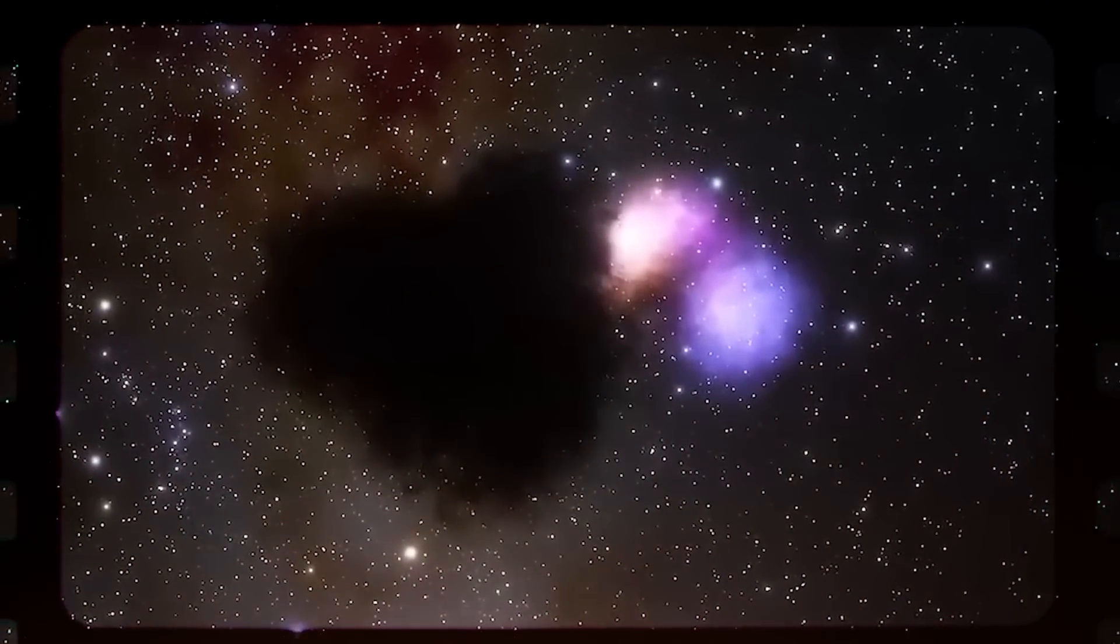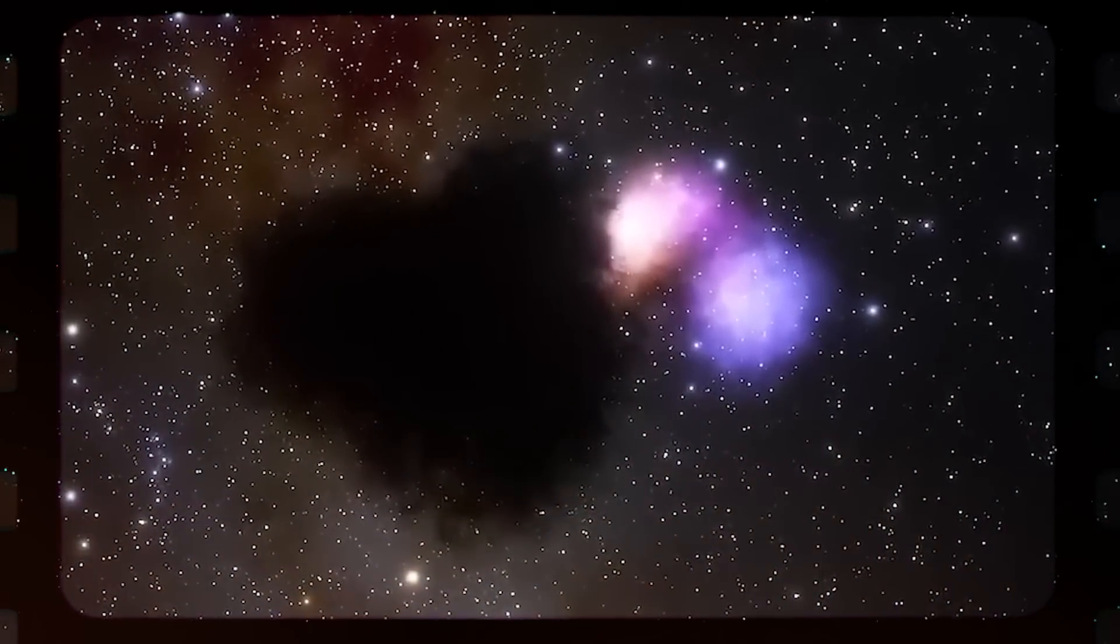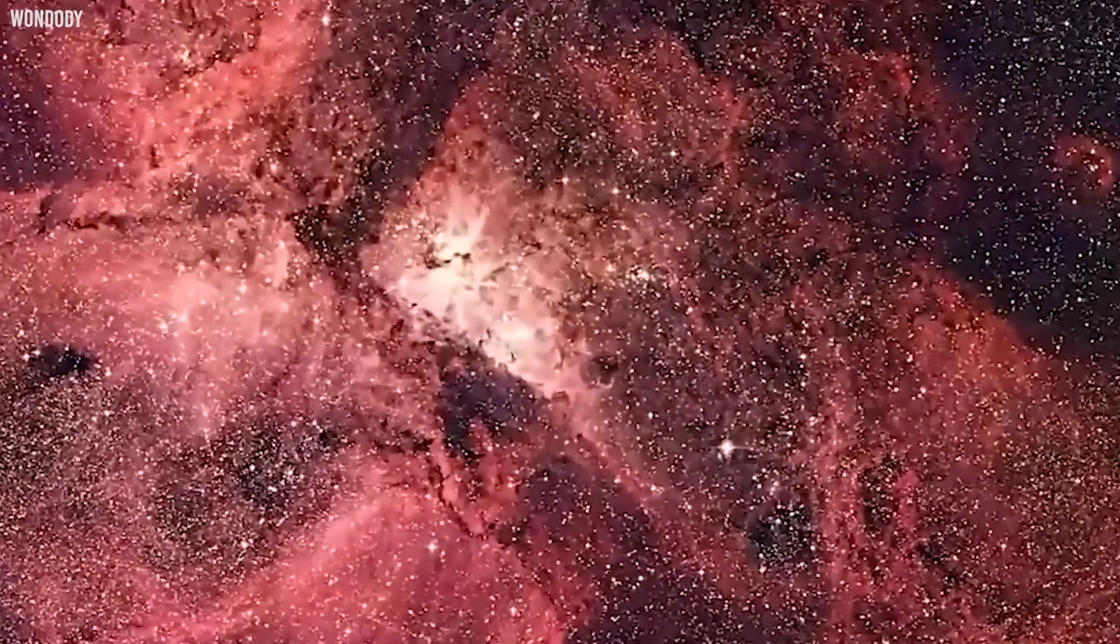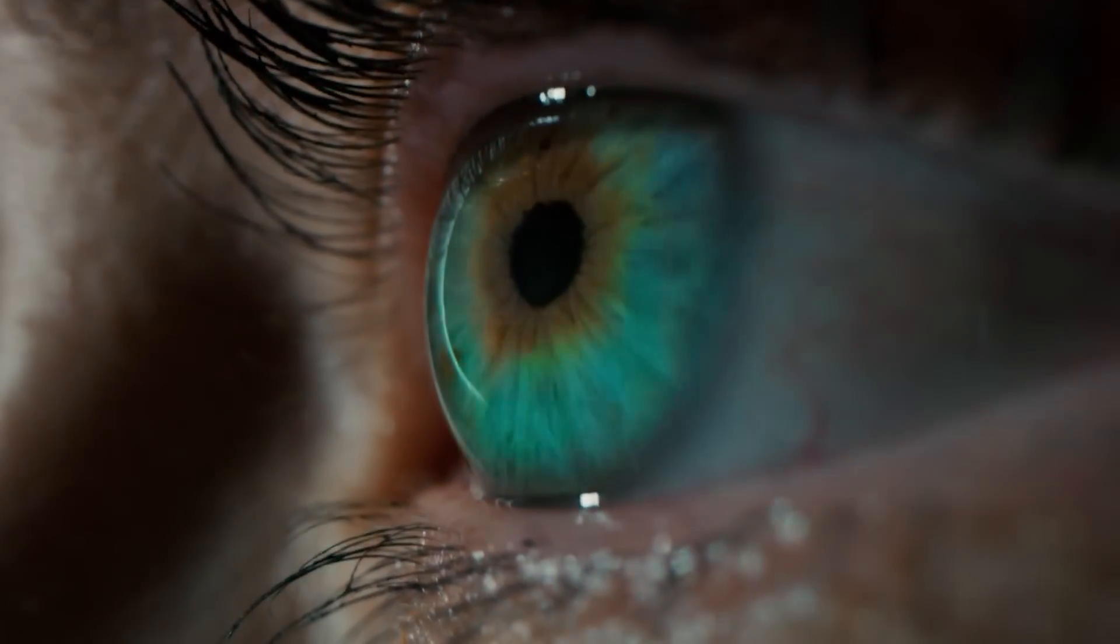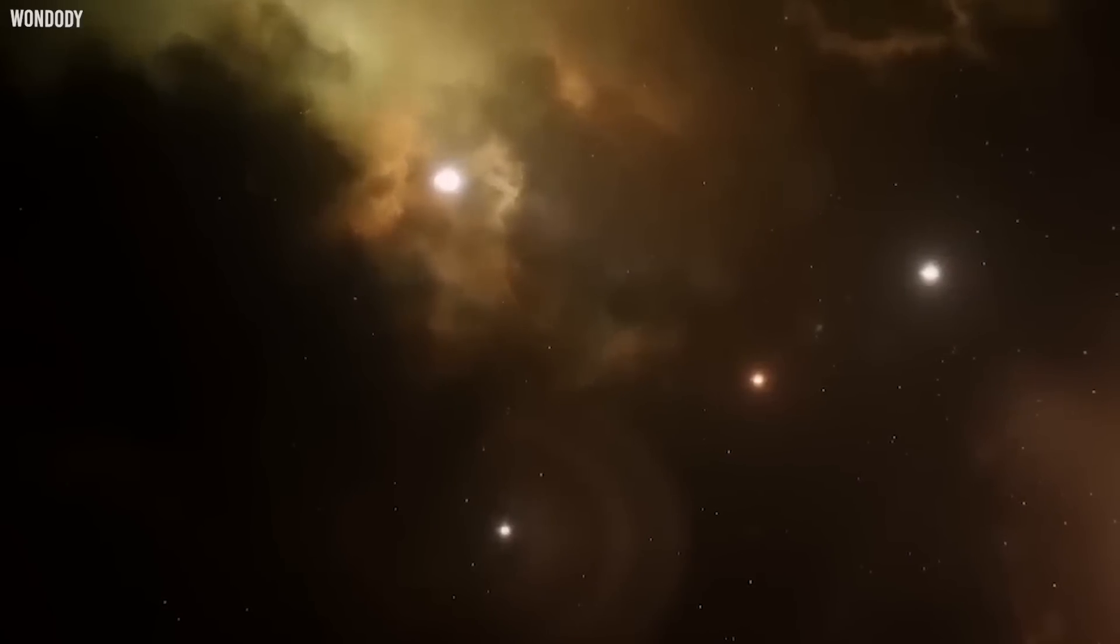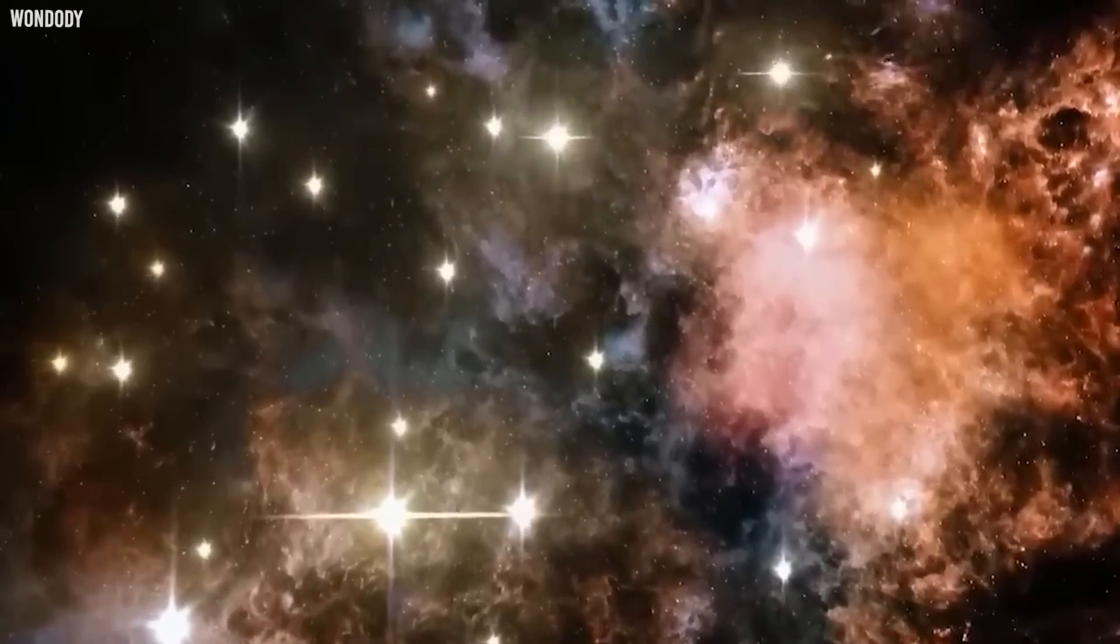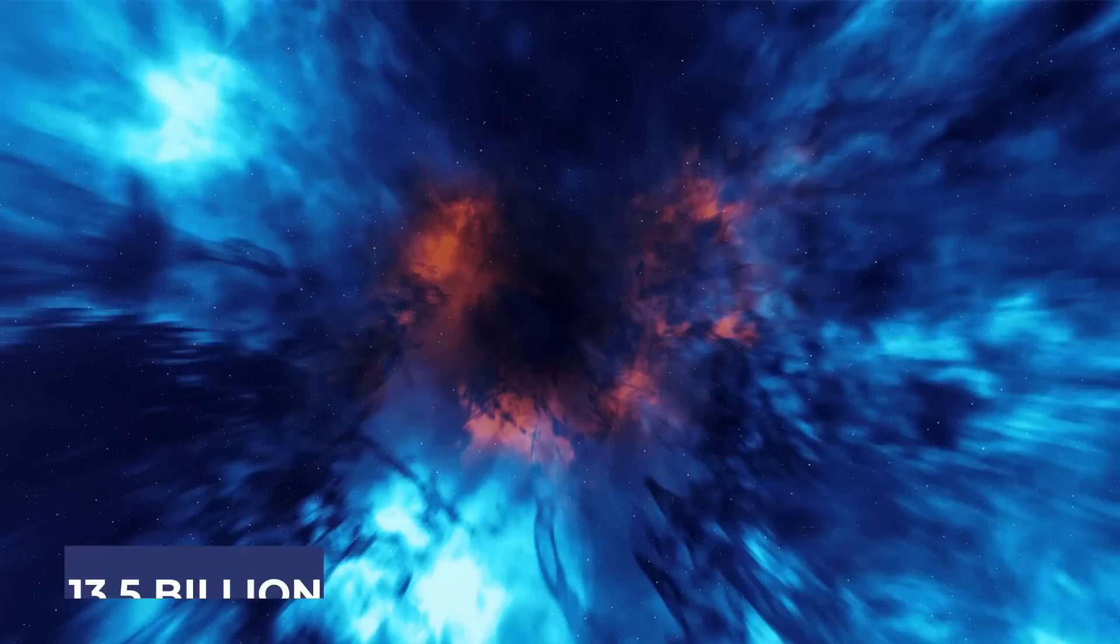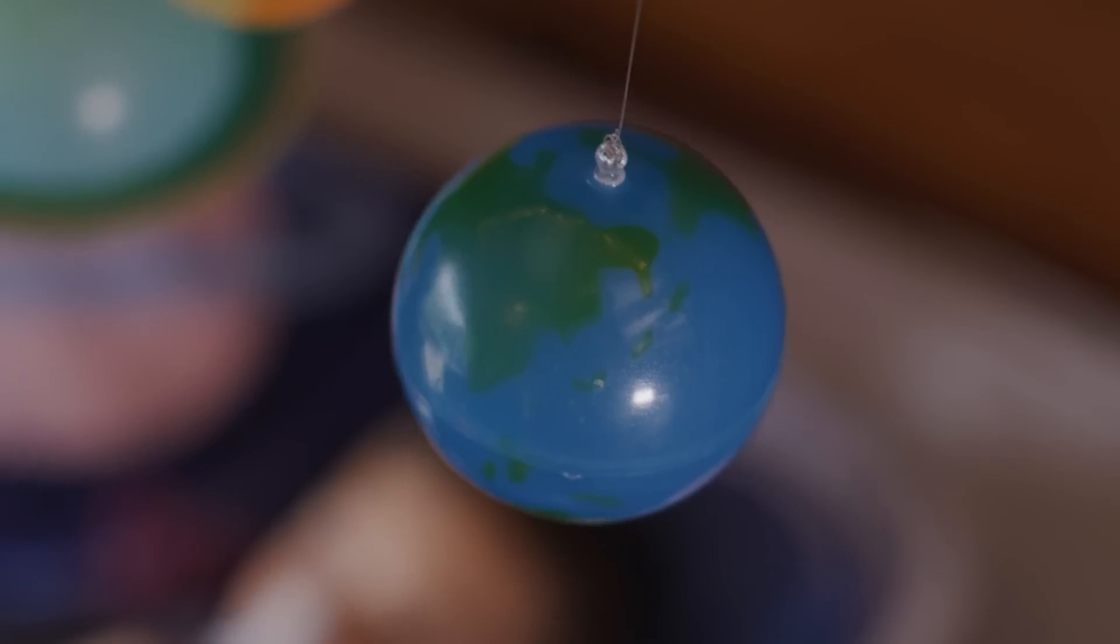Nobody expected these things to be this big. Scientists anticipated finding only tiny, newborn galaxies at this early stage of the universe when searching for galaxies. Galaxies as developed as our own were what they discovered instead. Because this wavelength is invisible to the human eye and can detect the weak light emitted by aging stars and galaxies, the telescope uses it to study the universe. By looking into the far universe, the observatory can figuratively go back in time to almost 13.5 billion years ago.